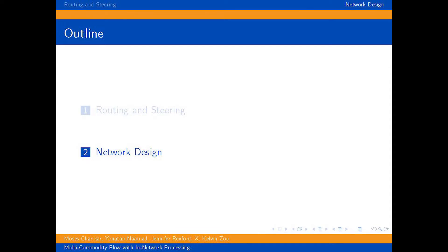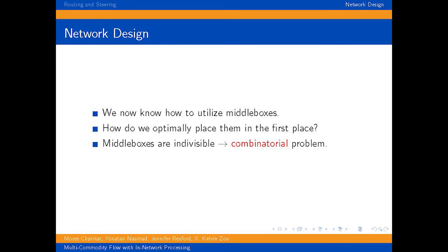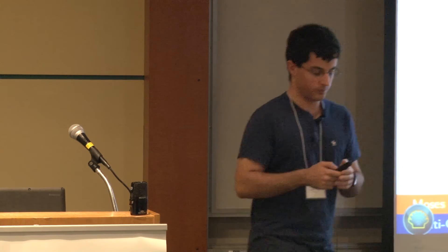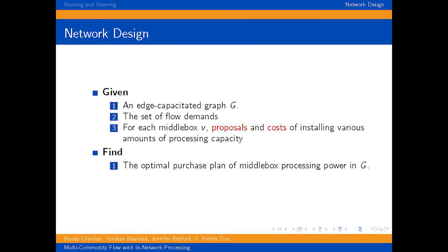Okay, now I'm going to transition into the network design section, which I won't get into much detail here. The first section was all about utilizing middle boxes optimally. But what happens if the middle boxes are not placed in the network yet? What we wanted to study is how do you optimally purchase middle boxes at various locations in the network to maximize the amount of processed flow that can be actually routed and steered. So formally, we're given a graph G. We're given the set of flow demands. And now for each vertex, instead of being given its processing capacity, we're instead told how much it costs to buy a certain amount of processing capacity at that vertex.